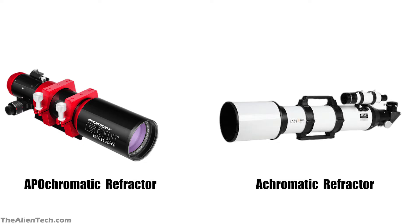If you just want to observe celestial objects, then your best option is to stick with an achromatic refractor telescope. Apochromatic telescopes usually give better and sharper images, which are good for astrophotography. Most astrophotographers prefer an apochromatic telescope, so if you want to do astrophotography, then an apochromatic telescope is for you.